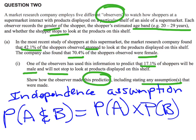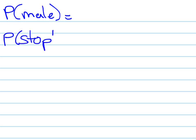So let's look at what they wanted. They talk about the 17.1% are males who will not stop. So those are the two things that I need to find. I need to find what is the probability of a shopper being male, and I need to find what is the probability of the person not stopping.